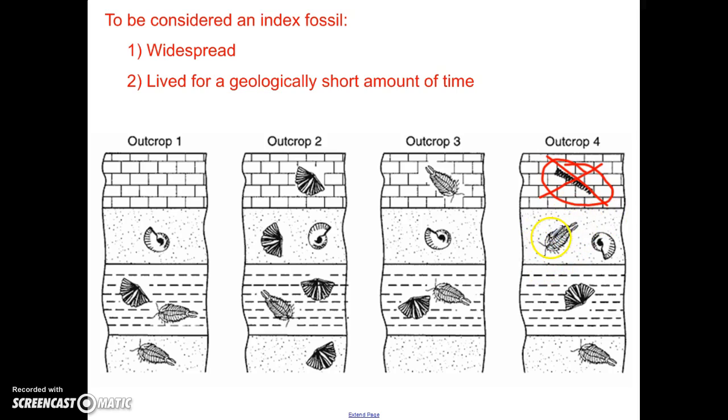How about this trilobite creature? Is it widespread? Well, I do see it in outcrop four, and I see it in three and two and one, so it is widespread. But did it live for a short amount of time? Well, the answer is no, because I see it appearing in multiple layers. If it's found in multiple layers that are separated by a layer in between, then it's not a short amount of time. In other words, does this one match with this or with this? I can't tell. So it is not an index fossil. The same thing is true about the shell over here. It is widespread. I see it in all four columns. But in outcrop two, I see it in four different layers. So it lived for a very long time. So it is not an index fossil. So the one that we're left with is this swirly sort of shell. It's found in all the outcrops, so it's widespread. And it only appears one time in each outcrop.